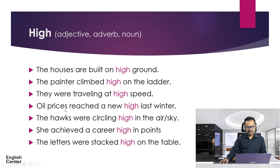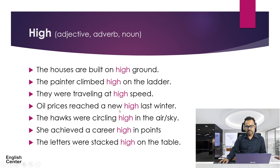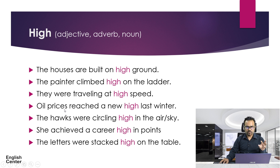Next example: Well, prices reached a new high last winter. What part of speech is 'high' here? This one is a noun. Why? Because 'reached' needs an object — reached what? 'A new high', where 'high' means the rate, the price level. So 'high' is a noun here, and 'new' is an adjective. 'Well prices' together form the subject — two words together as a noun phrase. Then 'reached' is the verb, 'a' is a determiner, 'new' is an adjective, 'high' is a noun.